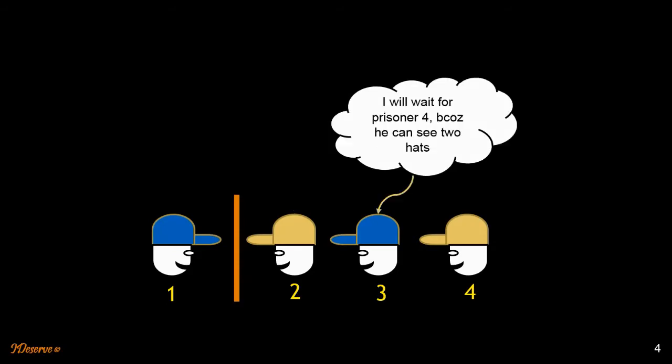What about prisoner three? He might be thinking, I'll wait for prisoner four because prisoner four can see two hats.